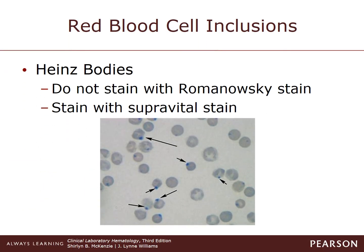Heinz bodies are composed of denatured or precipitated hemoglobin. They are not seen on the Romanowsky-type stain — they have to be stained with a supravital stain and appear as purple, round-shaped bodies of varying sizes, usually close to the cell membrane. They are seen in unstable hemoglobin disorders, oxidizing drugs, post-splenectomy, or G6PD deficiency.